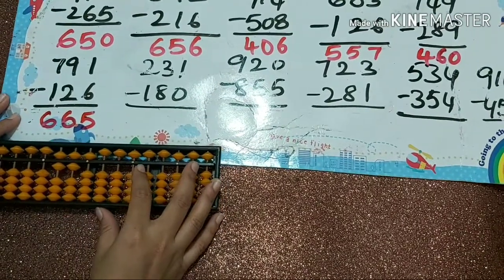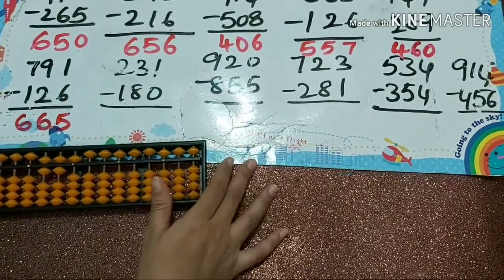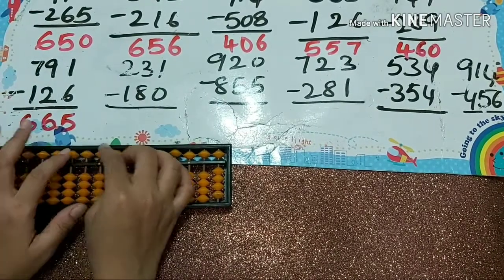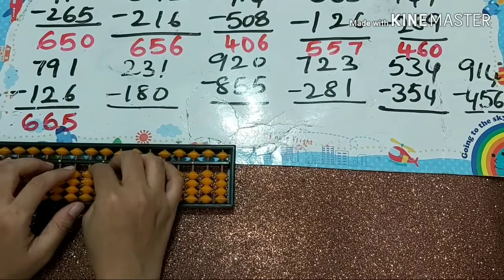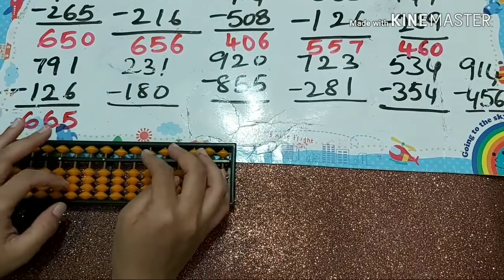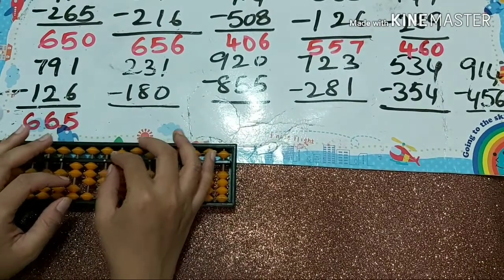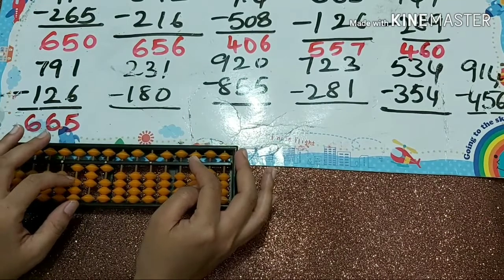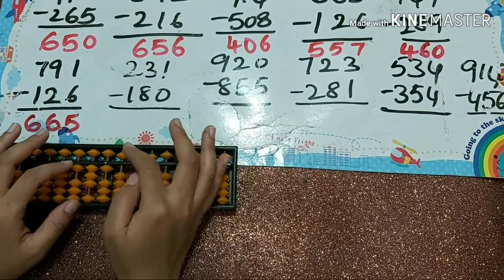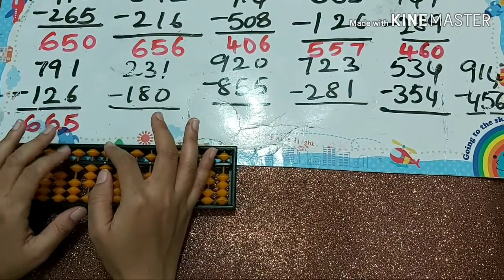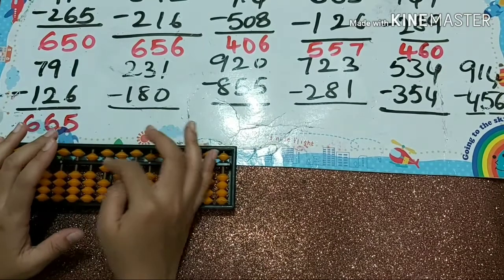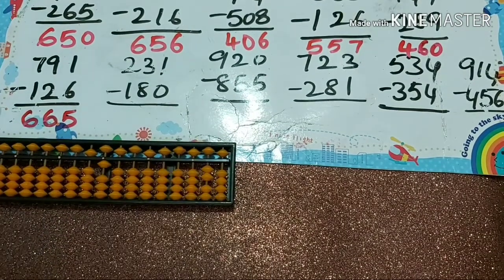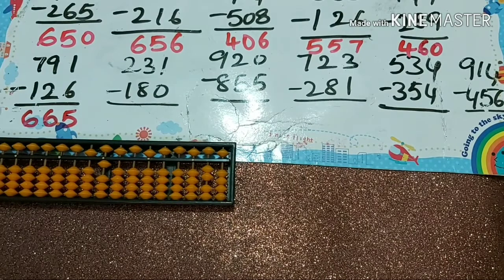Next one: 231 minus 180. Papa down, mama down, baby's down, and zero — no change needed. Answer is 51.